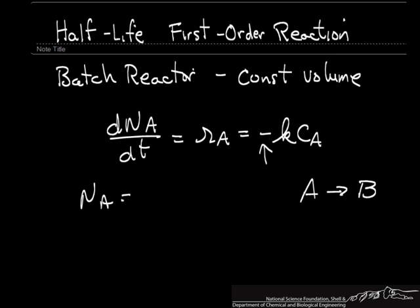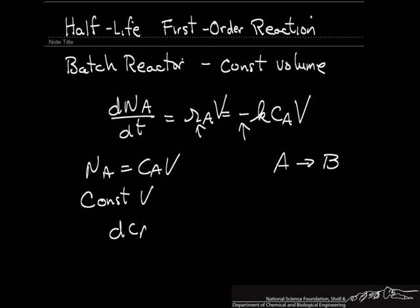Now the number of moles is the concentration times the volume, and I left something out here. There has to be a volume here to make the units consistent. This is the rate of reaction per volume, so we need the total volume of the reactor contents. If we now substitute for the number of moles in terms of concentration and volume, and we assume constant volume, then we can take the volume outside of the derivative sign and cancel it, and we have the simplified equation for a constant volume batch reactor, which we can separate variables and integrate.